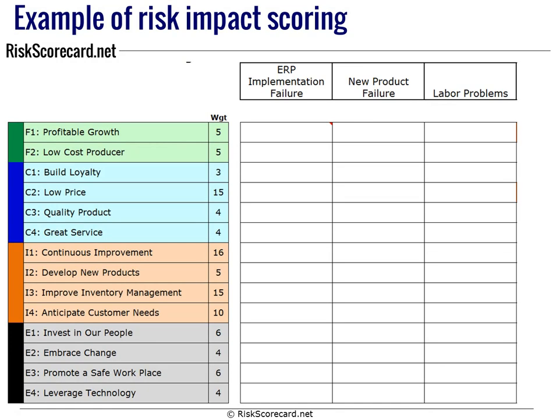What if we listed your strategic objectives down the left side of the page, along with their strategic importance — their weighting, that we've talked about before — and across the top, your risk register: the different risk elements that you need to take into account.